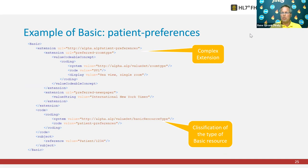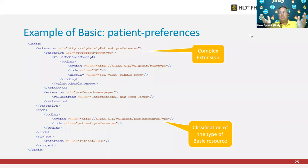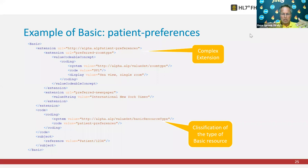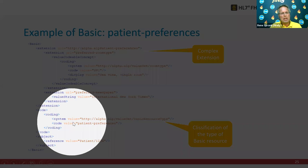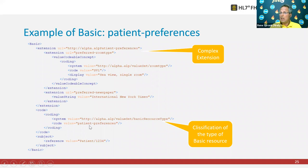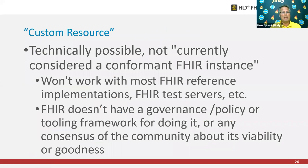Another example is patient preferences — something used in FHIR training courses. A patient may prefer a single room with a sea view, or a specific newspaper delivered each morning. That sort of information doesn't belong on the patient resource, which is about demographics. So we use a basic resource extended with a complex extension, and the code indicates it's of type patient preferences. You can even query for patient preferences, because that's one of the predefined search parameters for the basic resource.